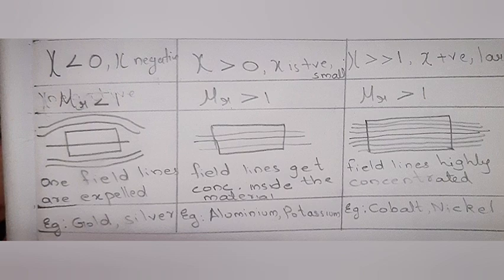Ferromagnetic: Chi very much greater than one. Chi positive, large. μᵣ greater than one. Field lines highly concentrated. Example: Cobalt, nickel.